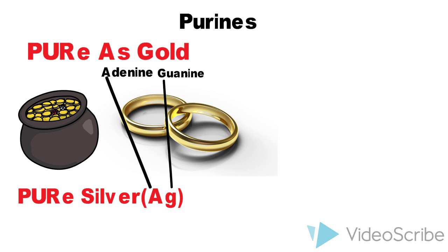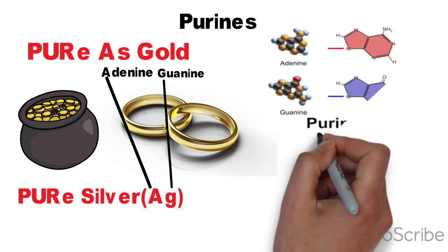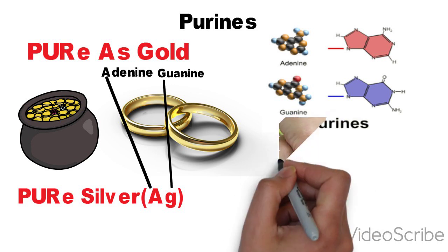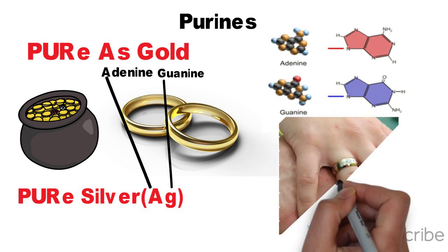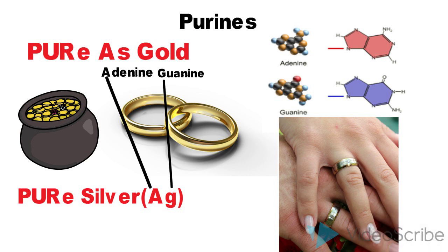You also know that purines have two rings in their structure. To remember this, just imagine that you have two gold or silver rings on your fingers.